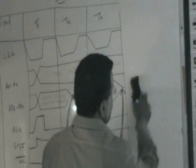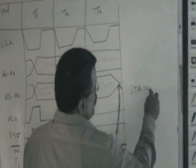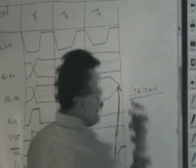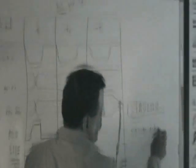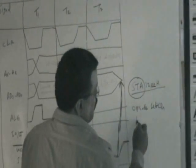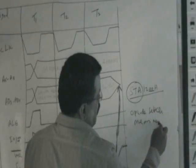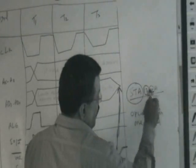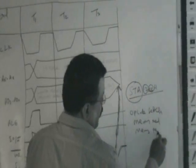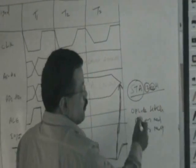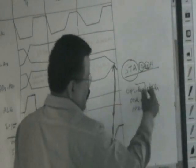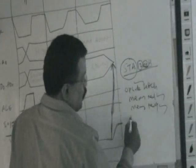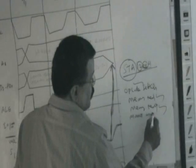If you take the instruction STA 1200H — store accumulator at address 1200 — it requires 4 machine cycles: one opcode fetch, one memory read for the lower-order byte, another memory read for the higher-order byte, and then the data should be written at that address. So you require one memory write as well. The meaning of STA A, 1200H is to store the content of the accumulator at memory location 1200. So you fetch the opcode, read the lower-order byte address, read the higher-order byte address, and then write the data to that address.